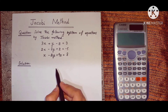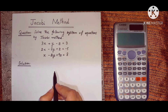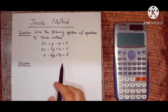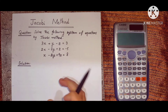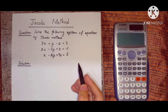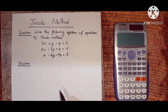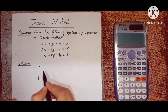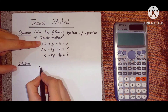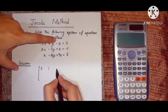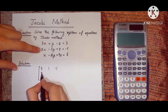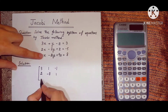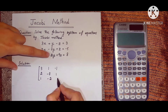To solve it using the Jacobi method, our first step is to check whether our system is strictly diagonally dominant or not. If it is strictly diagonally dominant, then we will converge to our answer very fast. To check this, let's write the system in the form of a matrix. The coefficient matrix is: 3, 1, -1 / 2, -8, 1 / 1, -2, 9.